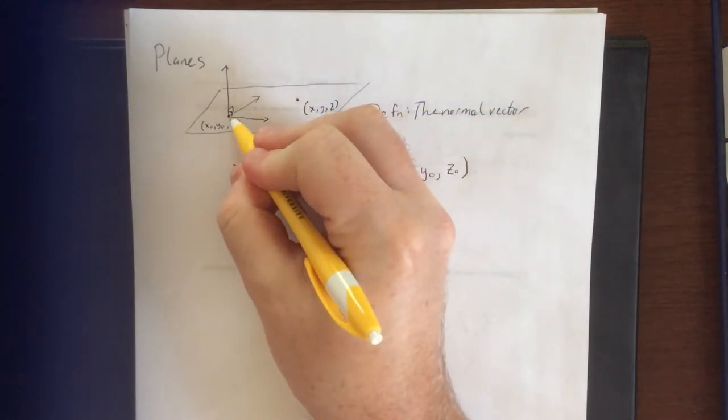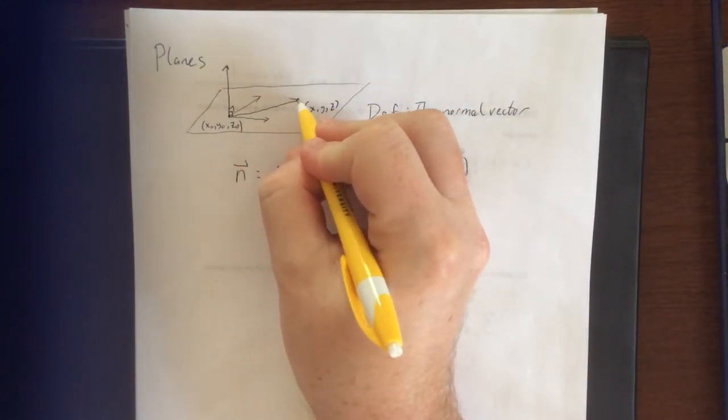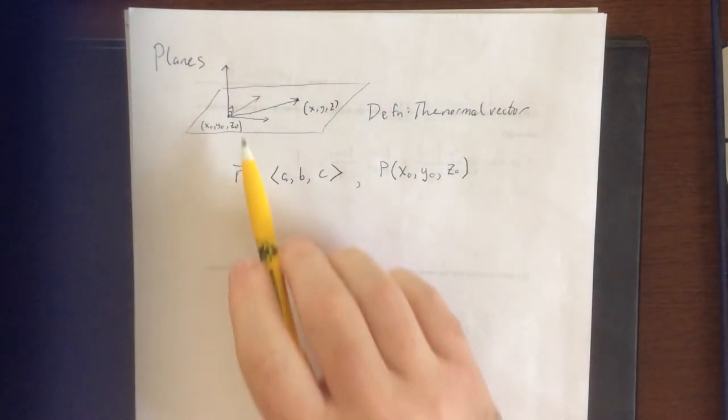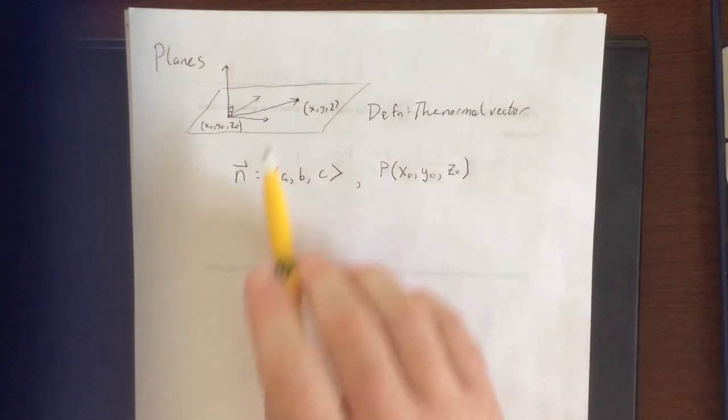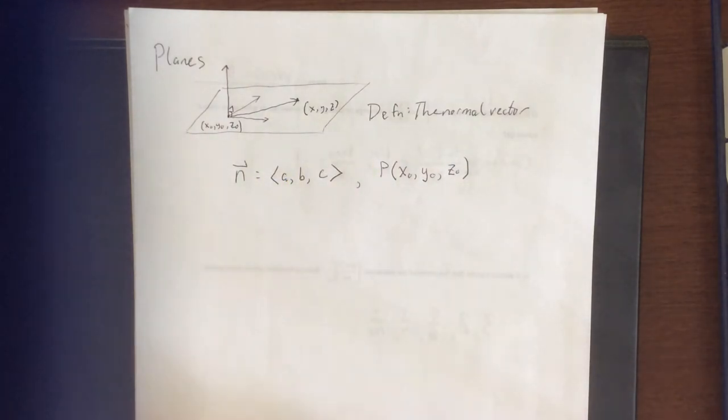Now, that means that if I were to connect initial point to any other point within the plane, I would be able to create a vector within the plane. Well, the normal vector is defined as orthogonal to every vector within the plane.